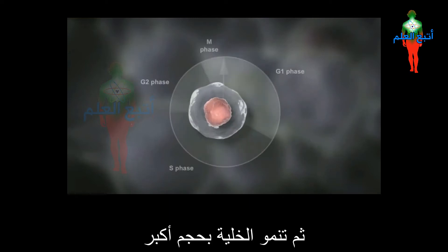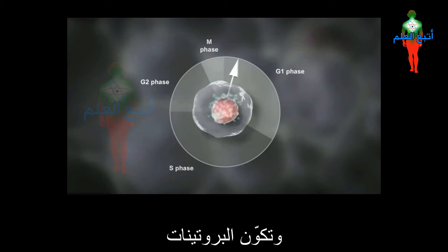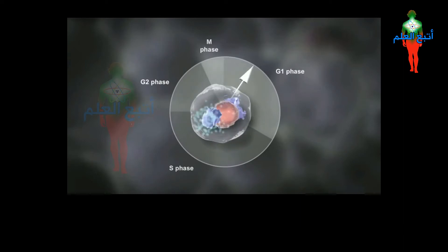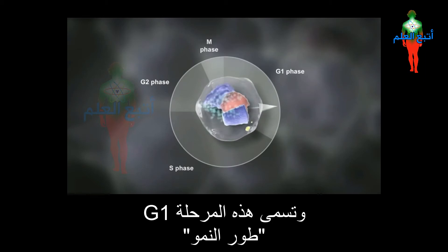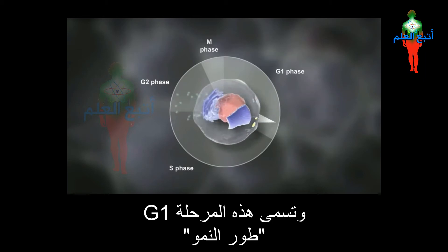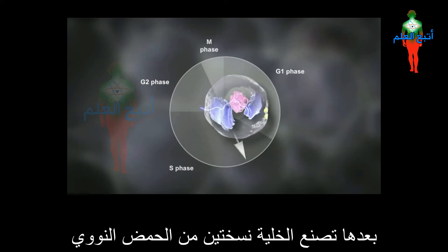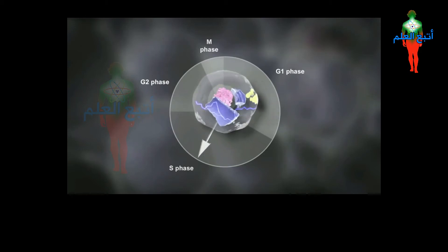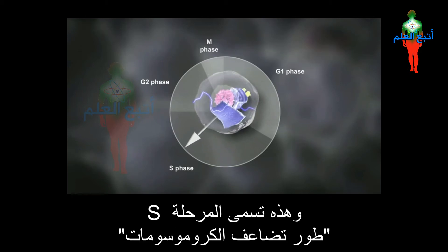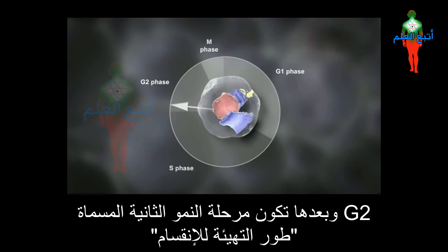The cell then grows larger in size and makes proteins. These are important for the next step. This phase is called G1. The cell creates two copies of its DNA in preparation for dividing. This is called the S phase.